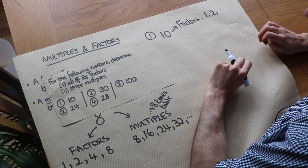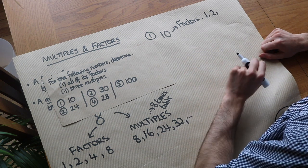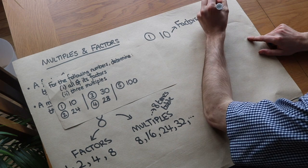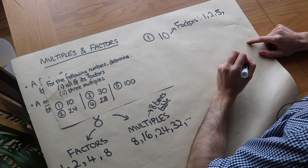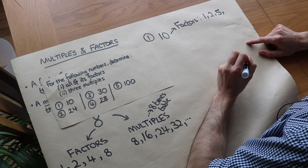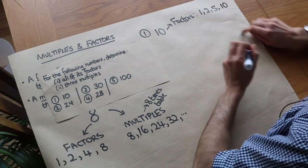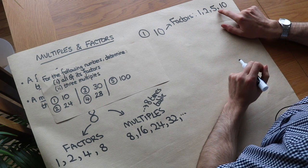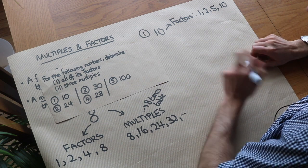What about 4? No, 4 doesn't go into 10 a whole number of times — we have a remainder. What about 5? Yes, you can divide 10 by 5 to get a whole number. Then 6, 7, 8, 9 — all no. 10? Yes. Once you get to the halfway point, you know there won't be any more factors until you reach the number itself.